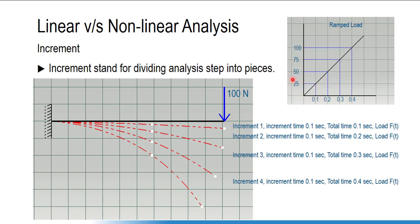In the first increment of 0.1 second, only 25 Newton load is applied. For the first increment, the solver gets convergence if there is no geometric nonlinearity, no material nonlinearity, and no contact nonlinearity — it very easily converges with one iteration. At the end of increment one, results are used to prepare the second increment, and again the problem is solved by assuming load as a function of time, and similarly for subsequent increments.